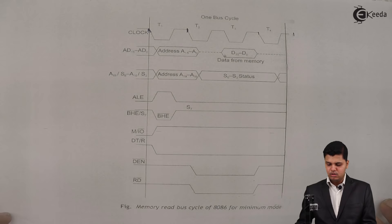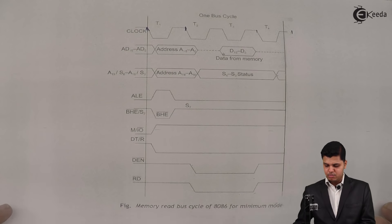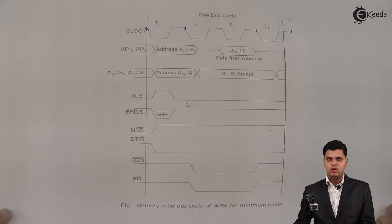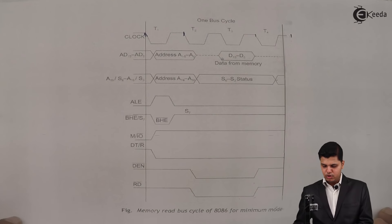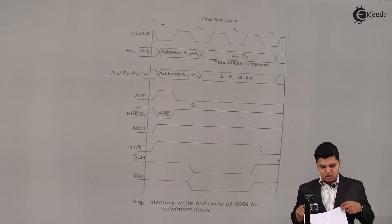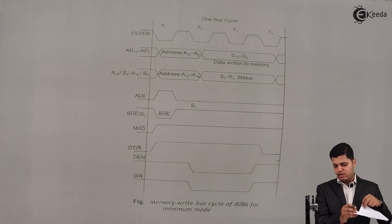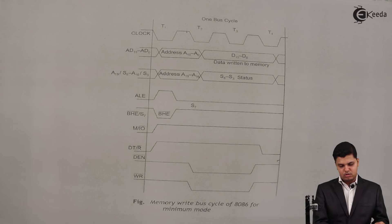To summarize the read cycle: in T1, the address is available on the address bus and latched onto the 8282 using ALE. In T2, DEN bar and RD bar are used to enable the transceiver and the read signal. In T3, the required data is read by the 8086 microprocessor. In T4, all activated signals are deactivated. Now we are going to see the write cycle for the 8086 microprocessor.